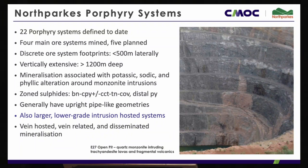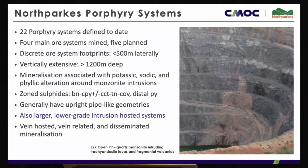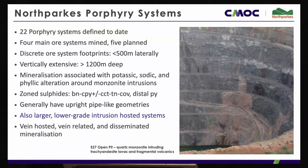Most economic systems have been defined to greater than 1,200 metres depth. E26, our backbone ore body, has been defined to 1,600 metres depth and is open at depth in terms of grade. Mineralisation and alteration correspond to global porphyry models — a concentrically zoned system with inmost potassic alteration, surrounded by sodic, calc-sodic or calc-potassic alteration, and out into an extensive propylitic alteration halo. Above our systems we are getting to grips with a well-defined phyllic to argillic alteration zone.